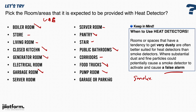Pump rooms are also stated to require heat detectors. Finally, garages and car parking areas that are not protected by sprinklers require a heat detector. In summary, the key locations requiring heat detectors are: boiler rooms, closed kitchens, generator rooms, garbage rooms, pantries, public bathrooms, food trucks, pump rooms, and garages or car parking.